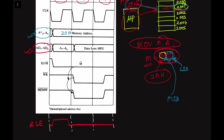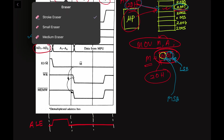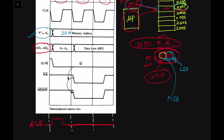The AD7–AD0 bus is a time-shared address-data multiplexed bus, meaning it sometimes works as an address bus and sometimes as a data bus. During the first cycle when ALE is high, it latches the lower order address 01H. The ALE signal indicates the multiplexed address-data bus must now transfer or read the address. The memory address 2001H has 20H as the higher order and 01H as the lower order memory address.